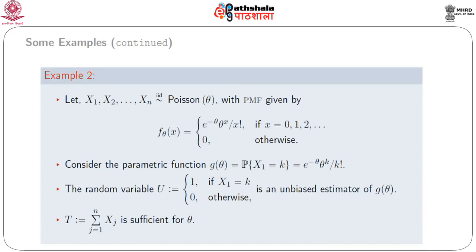We consider the second example. Suppose x₁, x₂, …, xₙ are iid Poisson(θ) random variables. The PMF is f_θ(x) = e^(−θ) θ^x / x! for x = 0, 1, 2, …, and 0 otherwise. We consider the parametric function g(θ) = P(x₁ = k) = e^(−θ) θ^k / k!, where k is any non-negative integer. We define a random variable u = 1 if x₁ = k, and 0 otherwise. Clearly u is an unbiased estimator of g(θ), and T = Σⱼ₌₁ⁿ xⱼ is sufficient for θ.